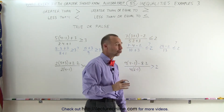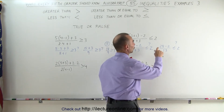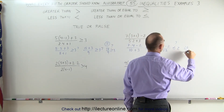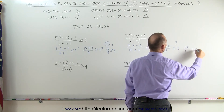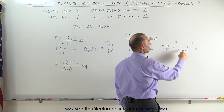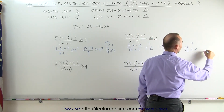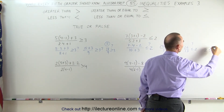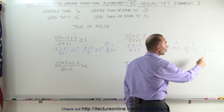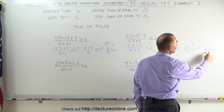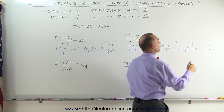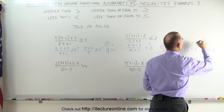We still can't tell for sure, so let's continue. 28 minus 2 is 26, divided by 13. Is that less than or equal to 2? We can see that 26 divided by 13 equals 2. Is 2 less than or equal to 2? The answer is yes — because even though 2 is not less than 2, it is equal to 2, and if one of the two conditions is correct, we must call this a true statement.